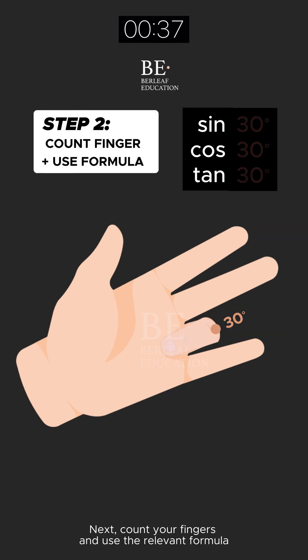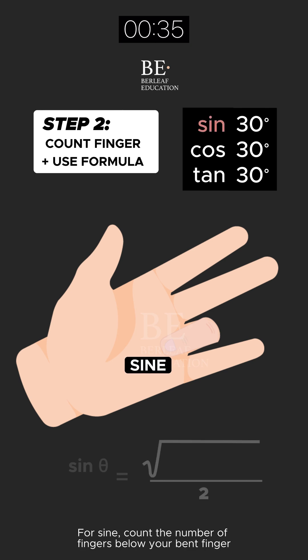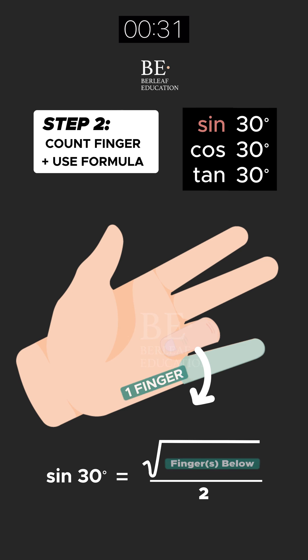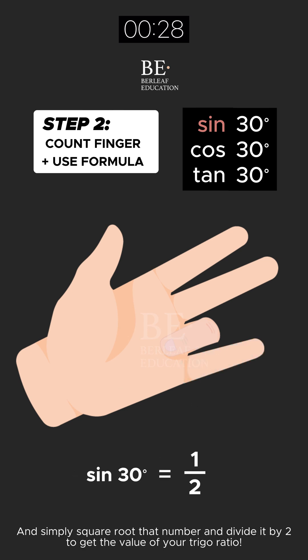Next, count your fingers and use the relevant formula. For sine, count the number of fingers below your bent finger, and simply square root that number and divide it by 2 to get the value of your trig ratio.